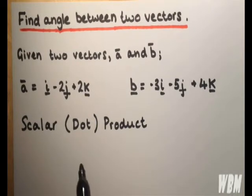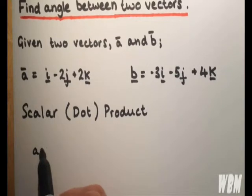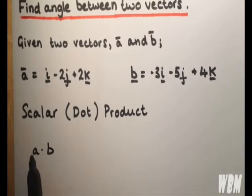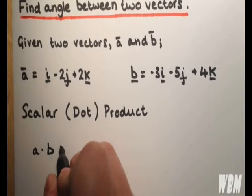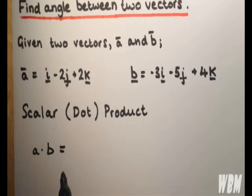So we write this as follows. We have vector a multiplied by vector b, and that's equal to the product of the magnitudes of a and b and cos of the angle between a and b.